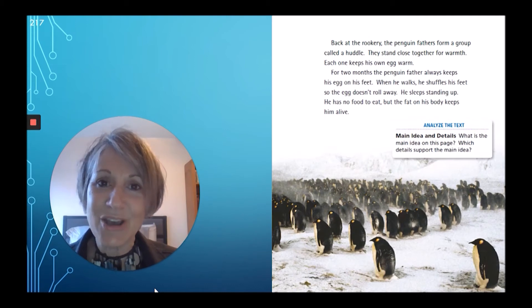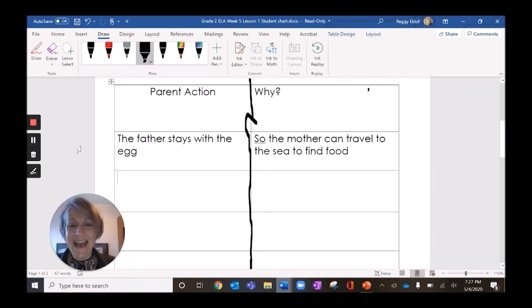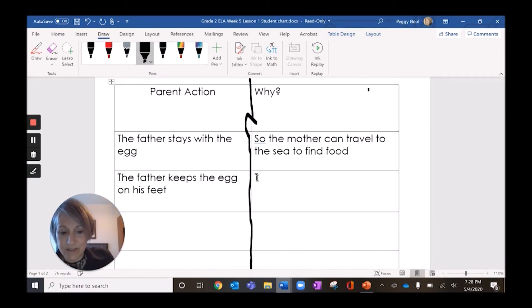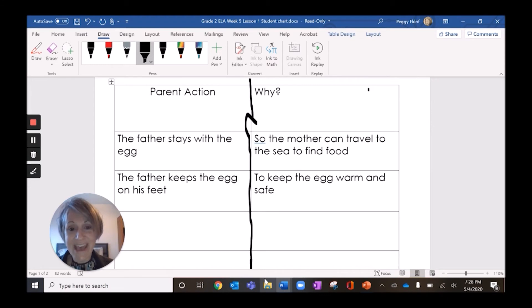Let's go to our graphic organizer now. I'm thinking this part is pretty important. The father's keeping that egg balanced on his feet. He's sleeping standing up, and he doesn't get to eat for over two months. So let's write the parent action here as the father keeps the egg on his feet. And why is he doing that? He's doing that so that the egg will stay warm and safe. So let's record that. To keep the egg warm and safe. So let's look at that again, the parent action. The father keeps the egg on his feet. Why does he do that? To keep the egg warm and safe.